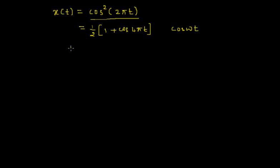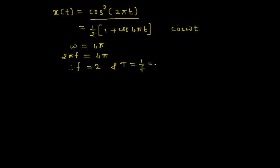Comparing with cos(ωt), we get ω = 4π. We also know that ω = 2πf = 4π in this case. Therefore f = 2 Hertz, and the period T = 1/f = 1/2 = 0.5 seconds.